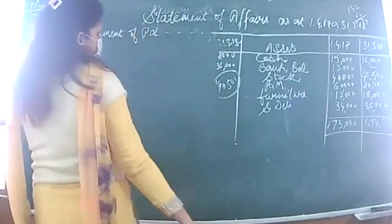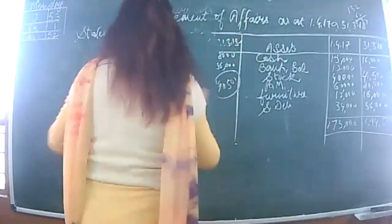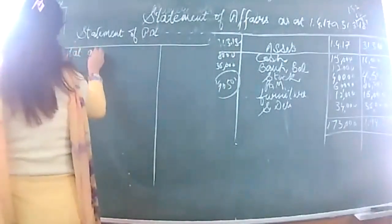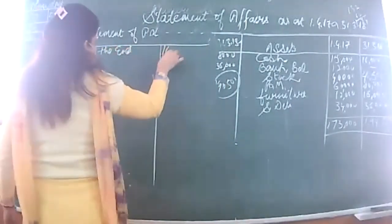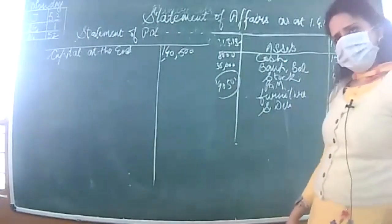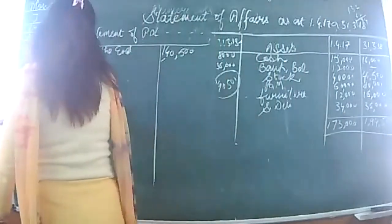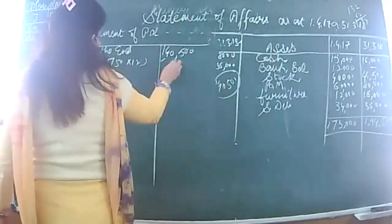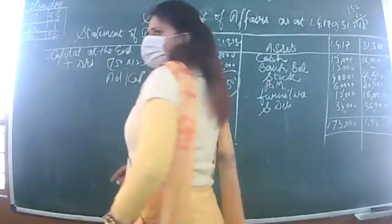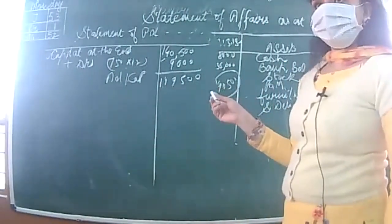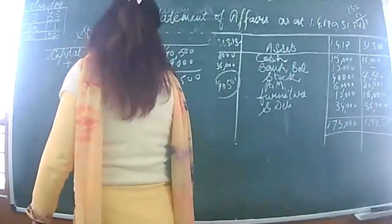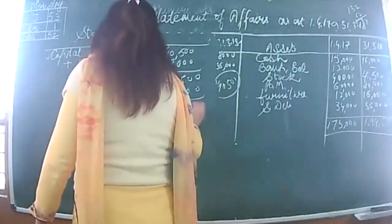Statement of P&L for the year ending 31st March 2018. Start with capital at the end: 1,40,500. Add drawings: 750 per month × 12 = 9,000. There is no additional capital. This gives adjusted capital. Compare with opening capital of 1,49,000. The trading profit so far is only 500. This is called trading profit. Now we need to apply adjustments.